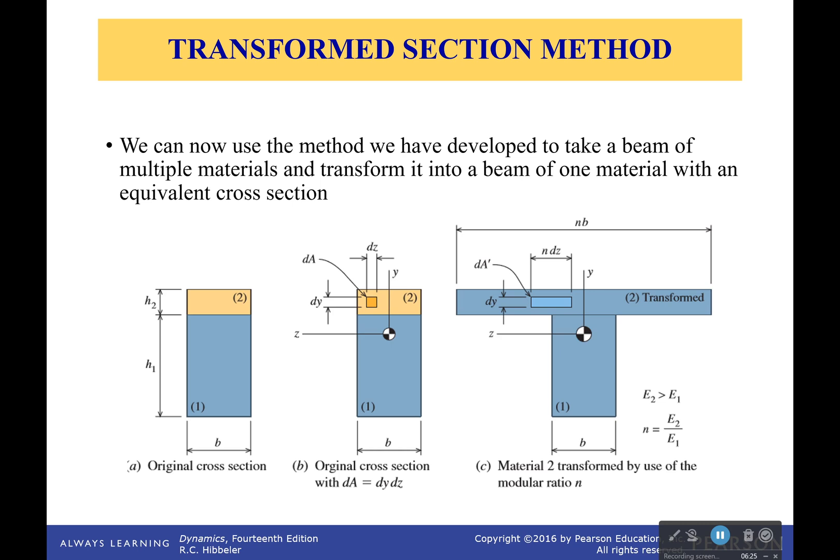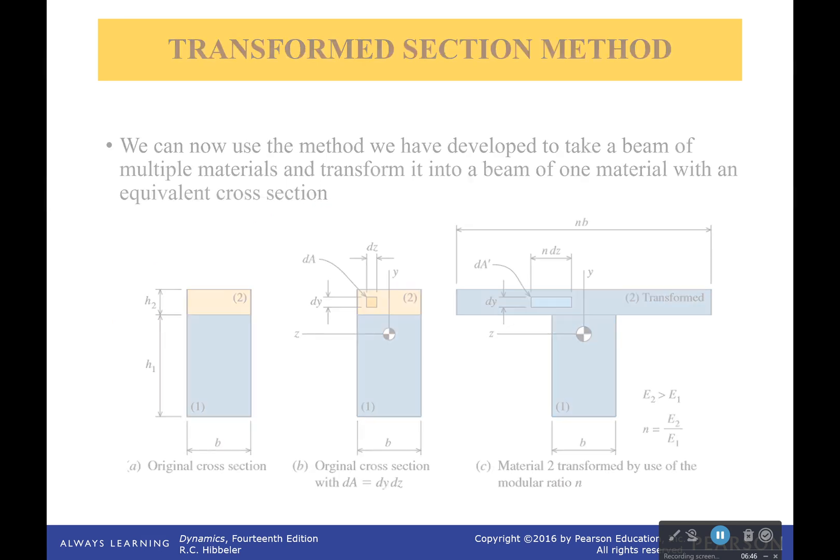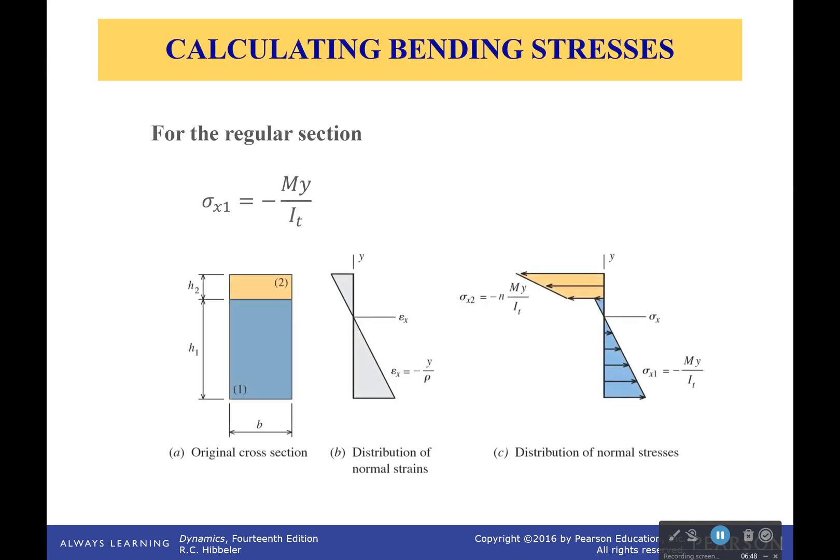Okay, so we're going to run through this last little step and see how everything works out. So using this method, we can then take a beam of multiple materials and convert it into a beam of a single material. Okay, a single material. And you can do it either way. I could have made this bottom beam very, very thin by turning it into wood. Either way would work.